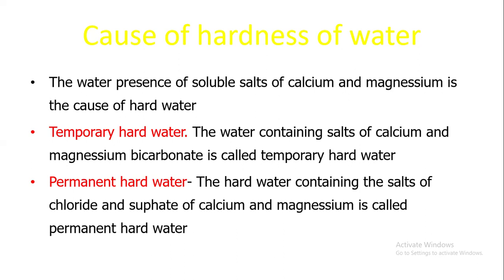There are two types of hard water: one is the temporary hard water and another one is the permanent hard water. In the temporary hard water, the water containing salts of calcium and magnesium bicarbonate salts is called temporary hard water.